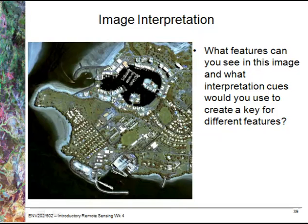Here's an example of some image interpretation using a high spatial resolution satellite image. What sort of features do you think you can see in this image? And what interpretation cues would you use to create a key for different features? Have a think about this and see if you can go about creating your own key.